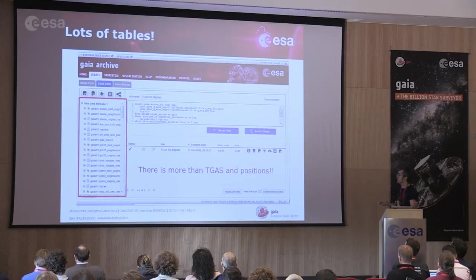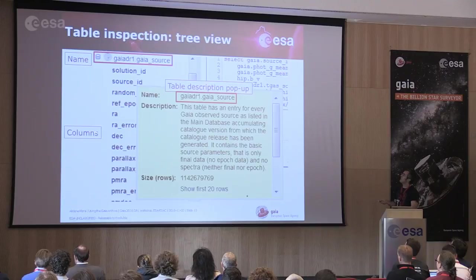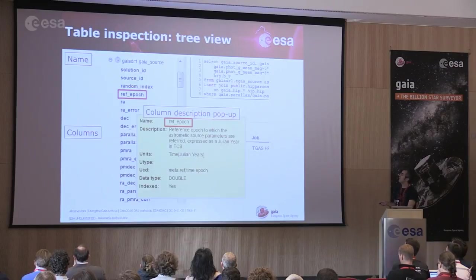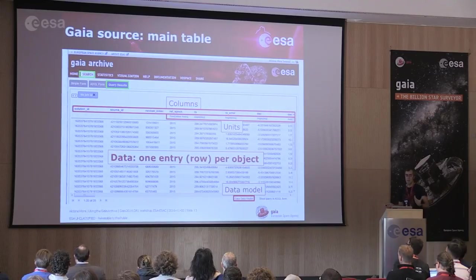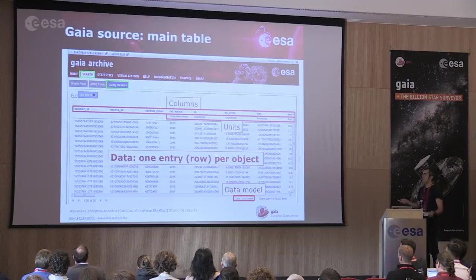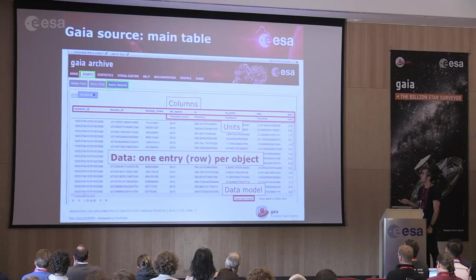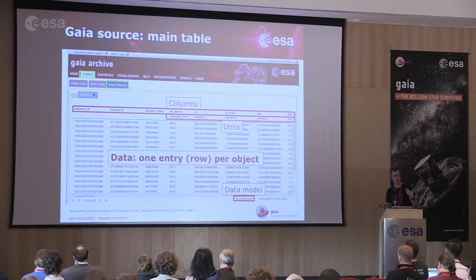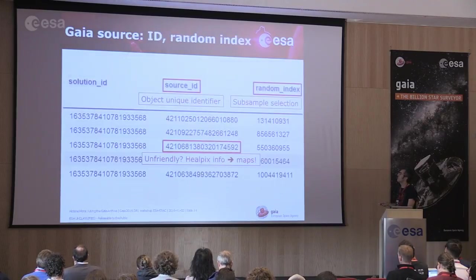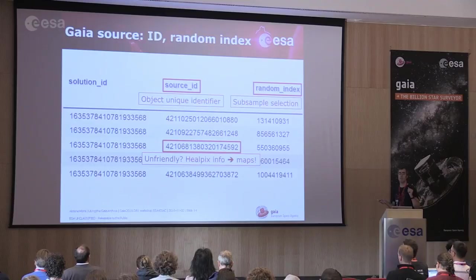There are ways to learn what is going on. If you click on any table you get a basic summary of what is in there; if you click any column you also get some information. And if you click 'show me the data' you can start exploring. In Gaia source, the main table in Gaia Data Release 1, each row is one object. We have different columns, units, and a link to the data model with a much bigger, more updated description.